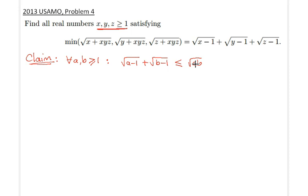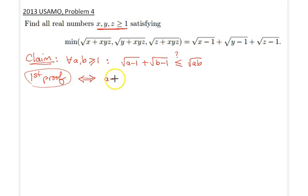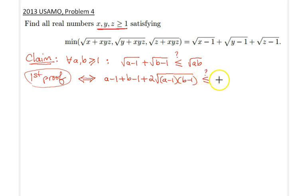Let me provide two separate proofs to this beautiful result. The first proof is a simple AM-GM application. So that's the inequality we would like to prove. Let's square both sides — we would like to prove if that inequality is actually true. So we can write an equivalent statement by squaring both sides: a−1, b−1, less than or equal to ab.